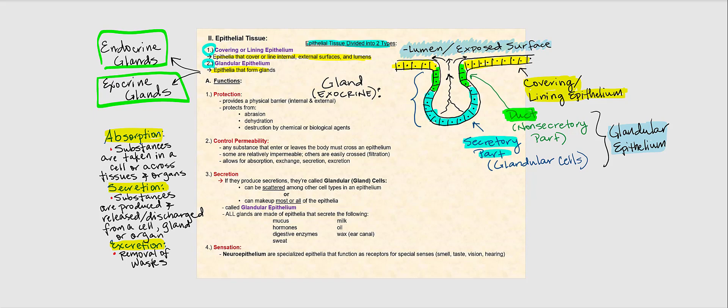One function of epithelial tissue is protection. Since epithelial tissue is exposed to the lumen and external surfaces, it physically provides a barrier. It protects us from abrasion, dehydration, destruction by chemical or biological agents. Epithelial tissue is the most exposed tissue — it's what's facing the lumen and the exposed surfaces.